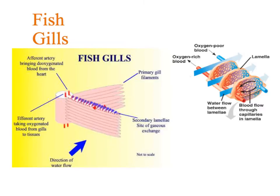For the concentration gradient, fish have the best method to maintain a high concentration gradient: counter current flow. Blood flows in one direction and water flows in the opposite direction, which always maintains a steep concentration gradient across the whole of the gills. Finally, the capillaries have a one-cell-thick wall, which provides a really short diffusion distance. So fish are really well adapted - each part of Fick's Law is fulfilled.